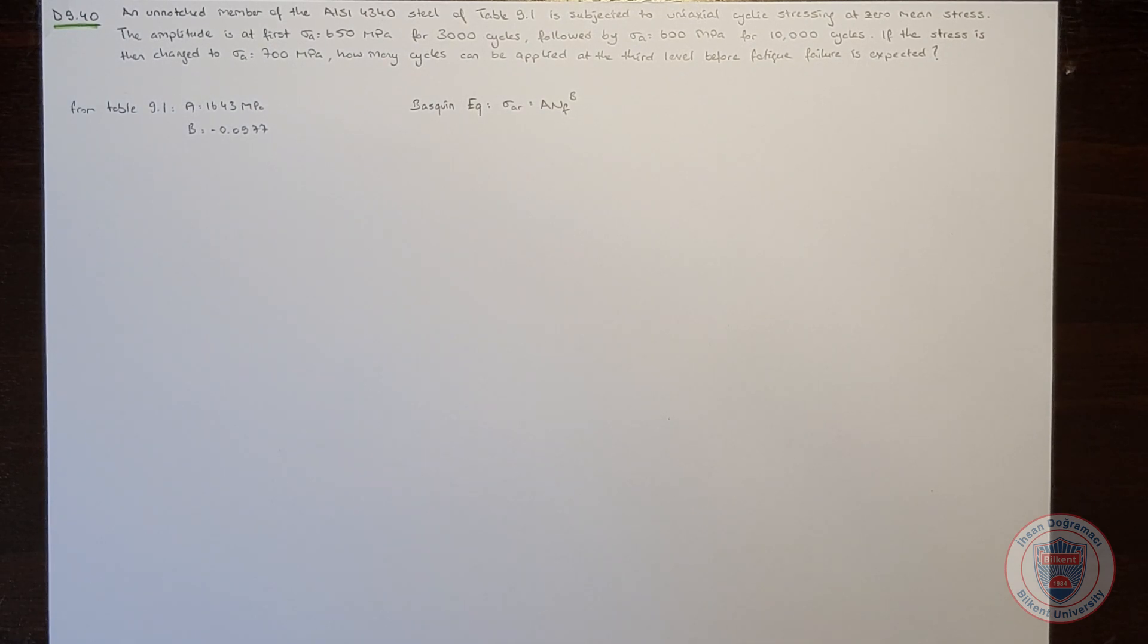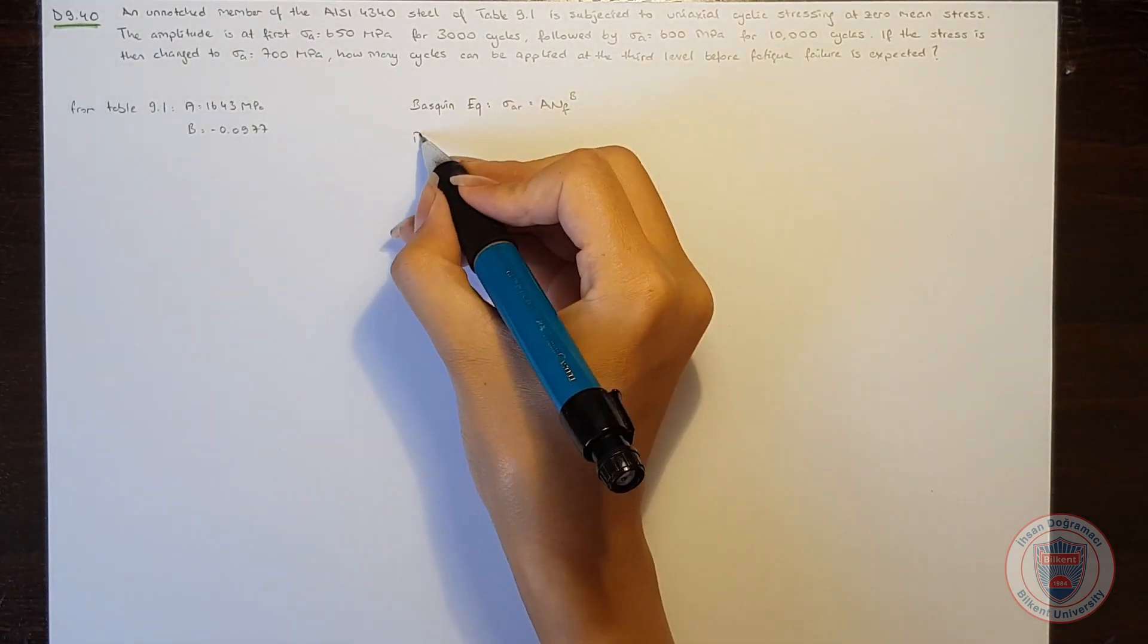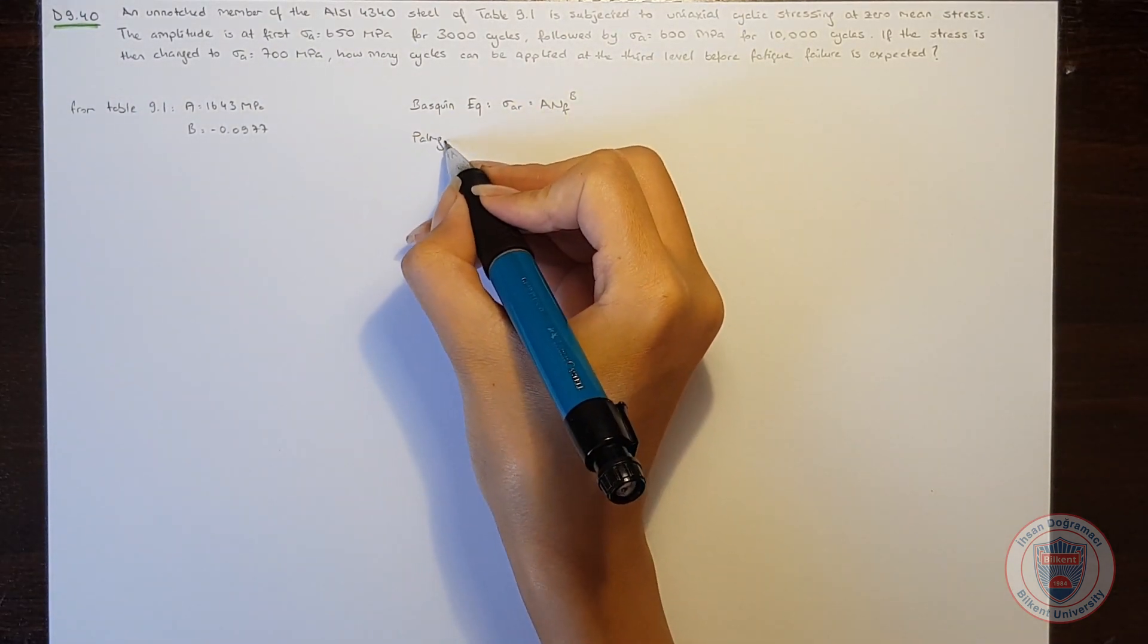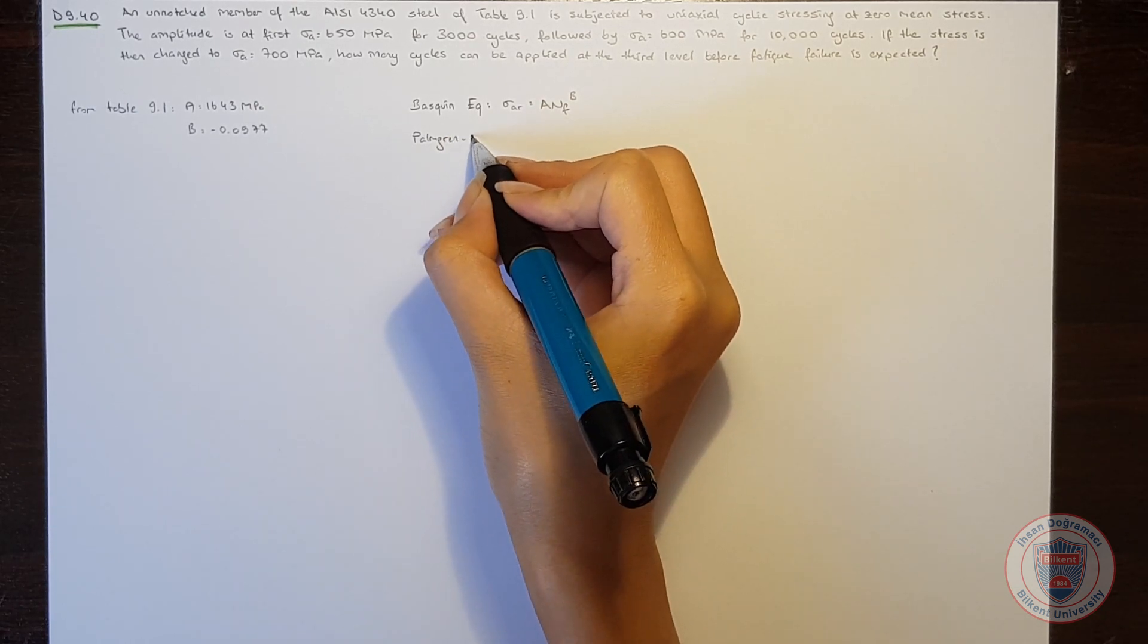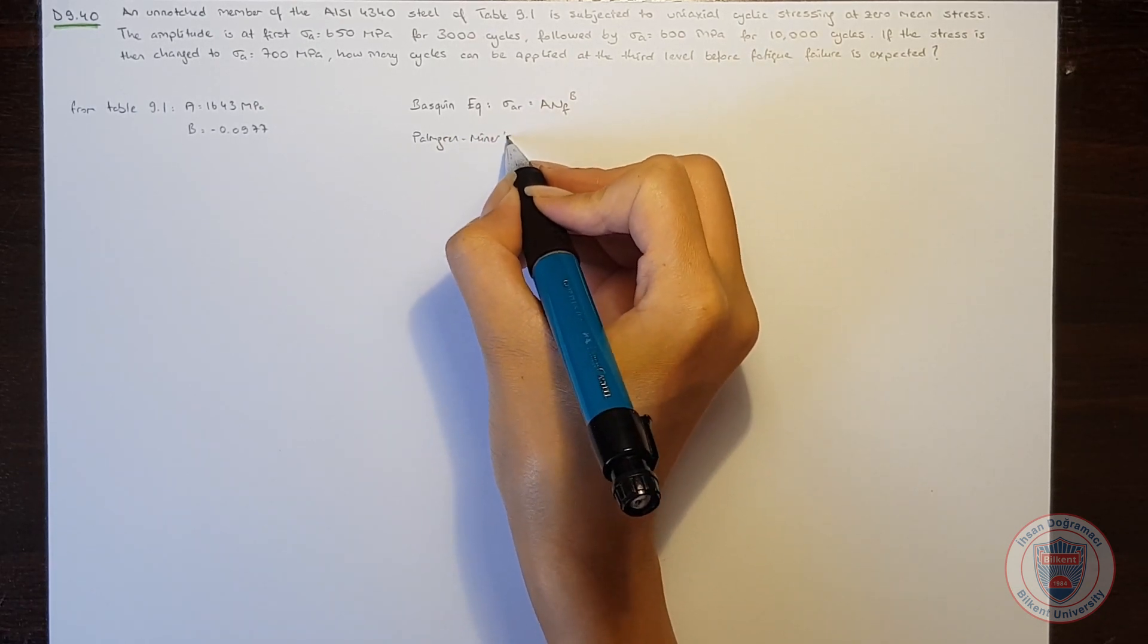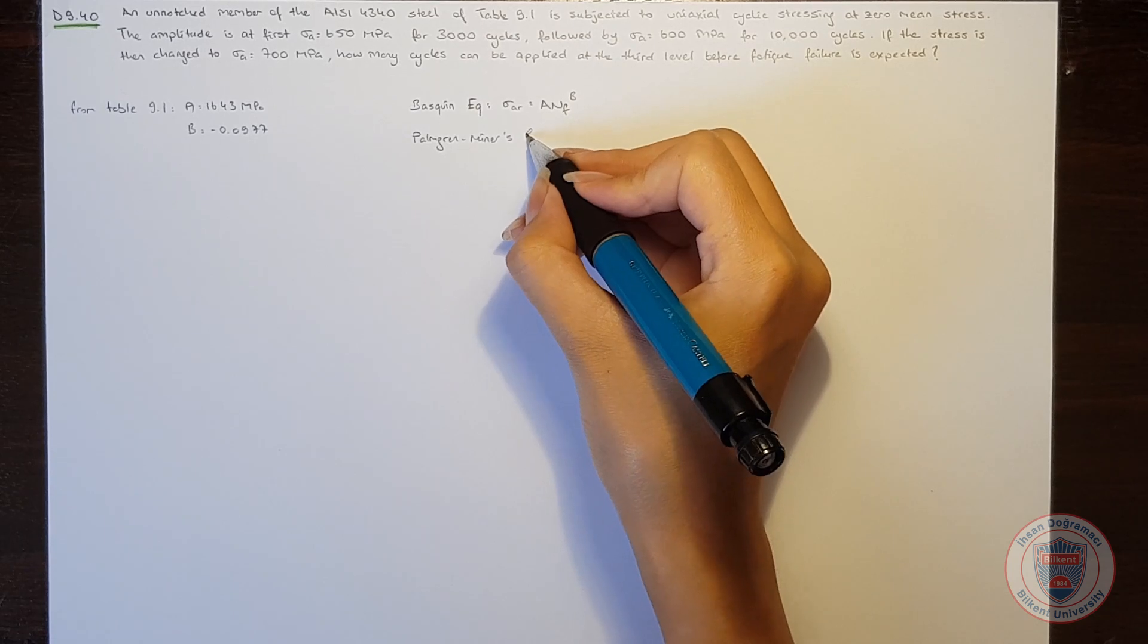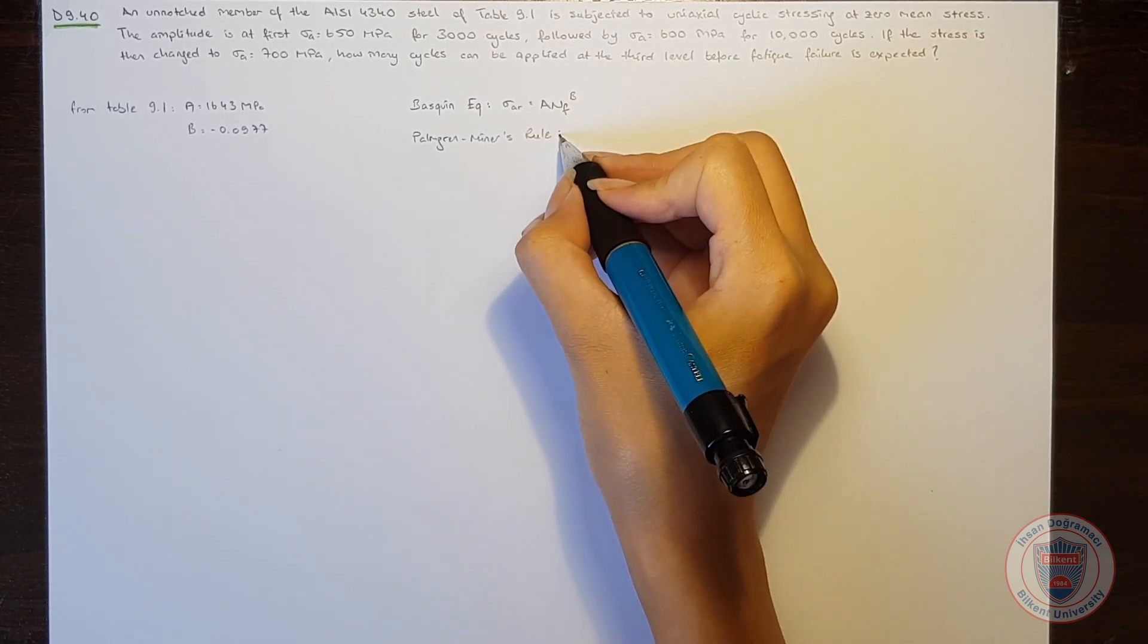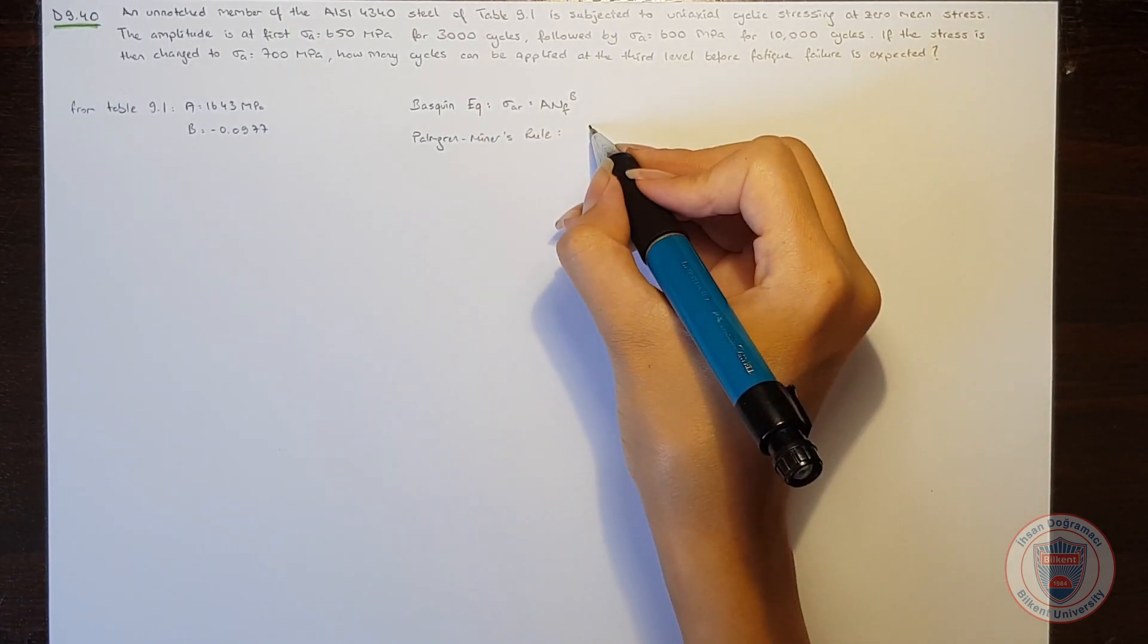We will also need Miner's rule, which states that the sum of the ratios of the cycles from 1 to j will be equal to 1.